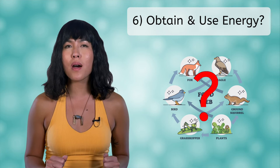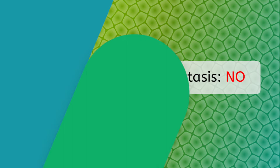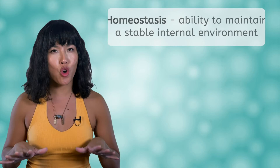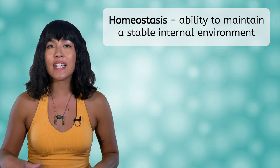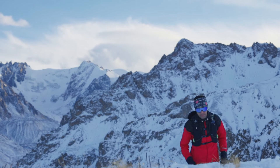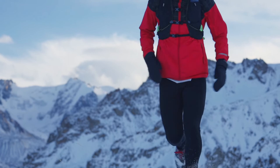The last criteria for life is the ability to maintain homeostasis. We'll talk more about homeostasis in the next unit, but for now it's enough to know that it refers to our body's ability to maintain a stable internal environment. It's how our bodies are able to maintain the right temperature, water content, pH, and so much more regardless of what is going on around us.